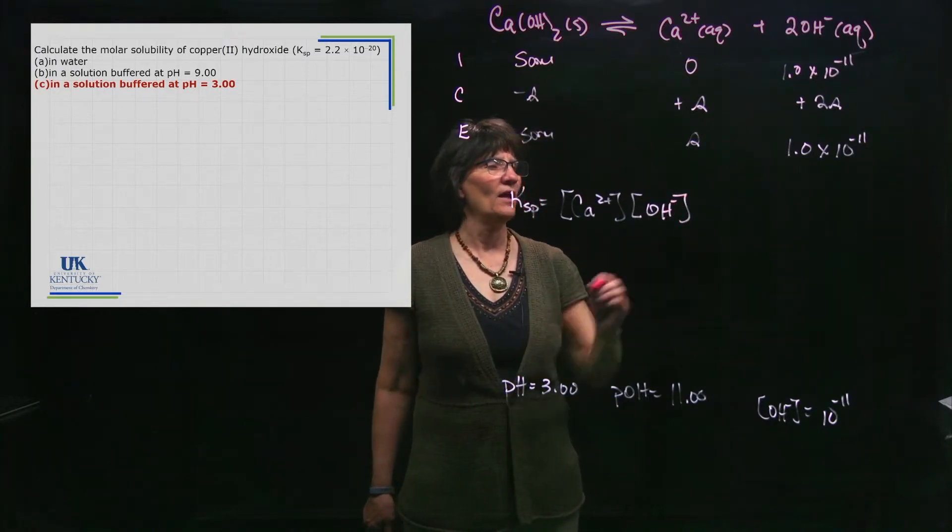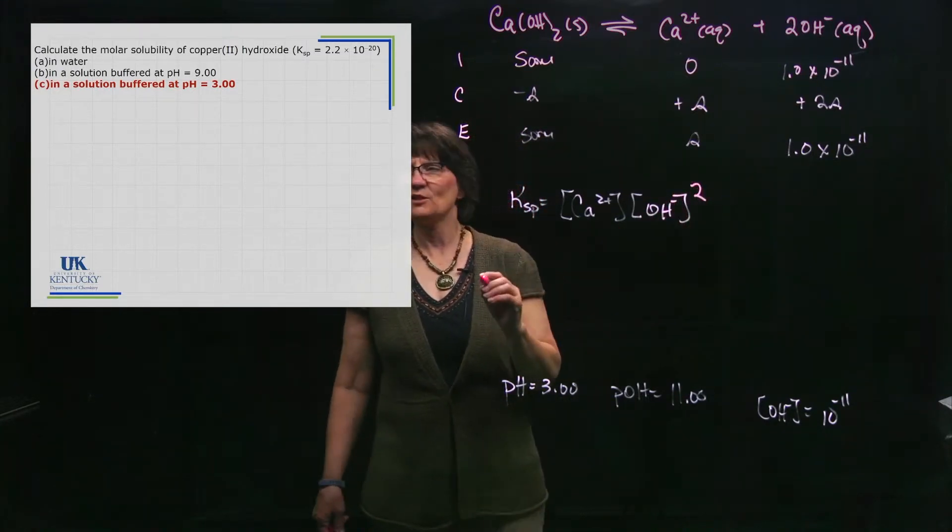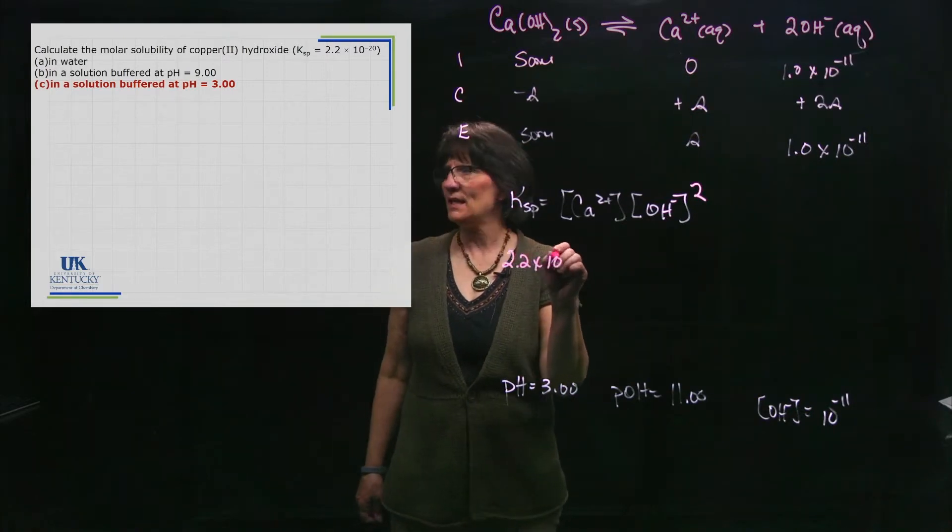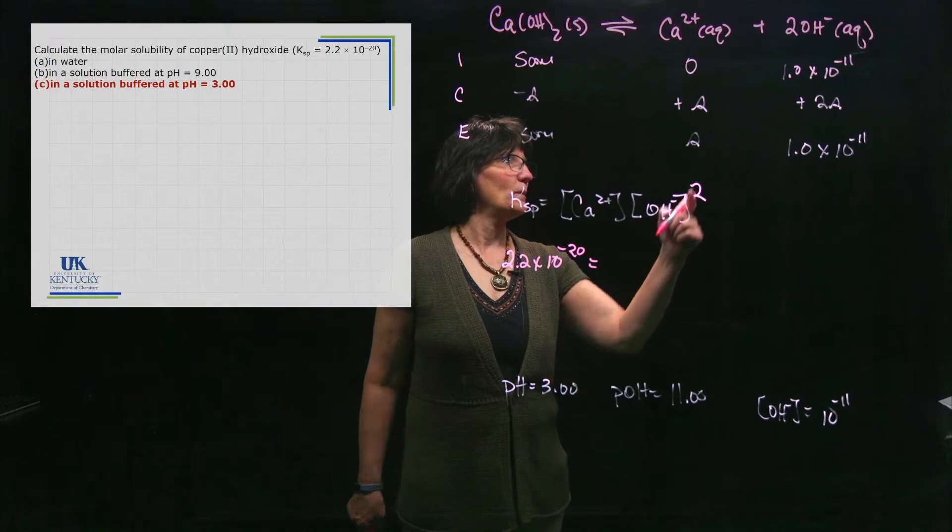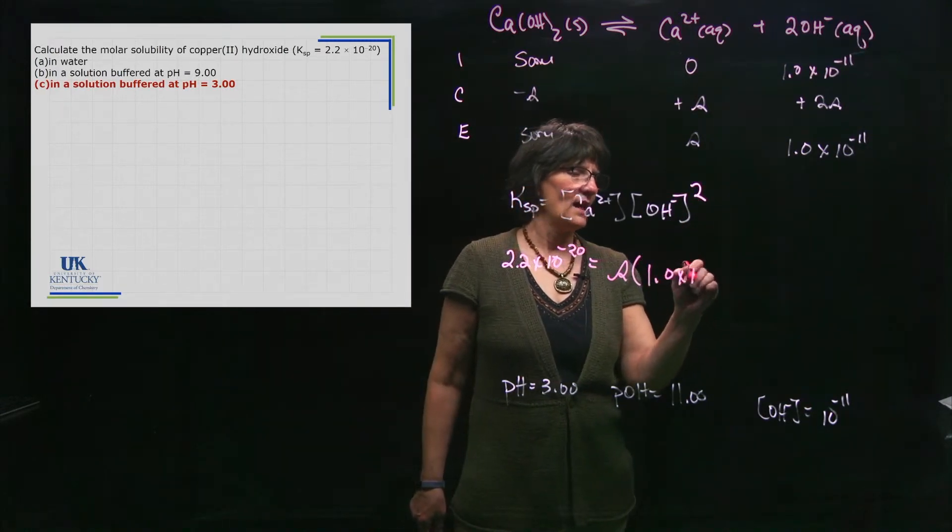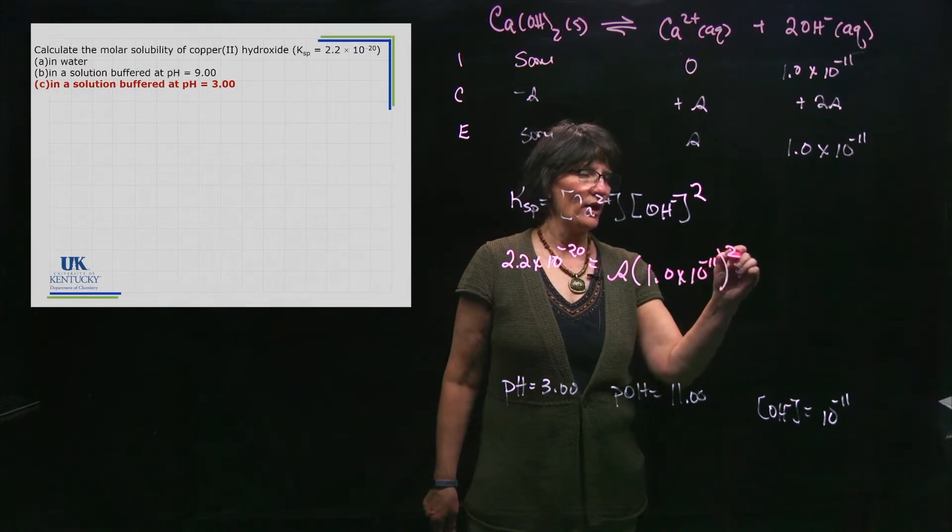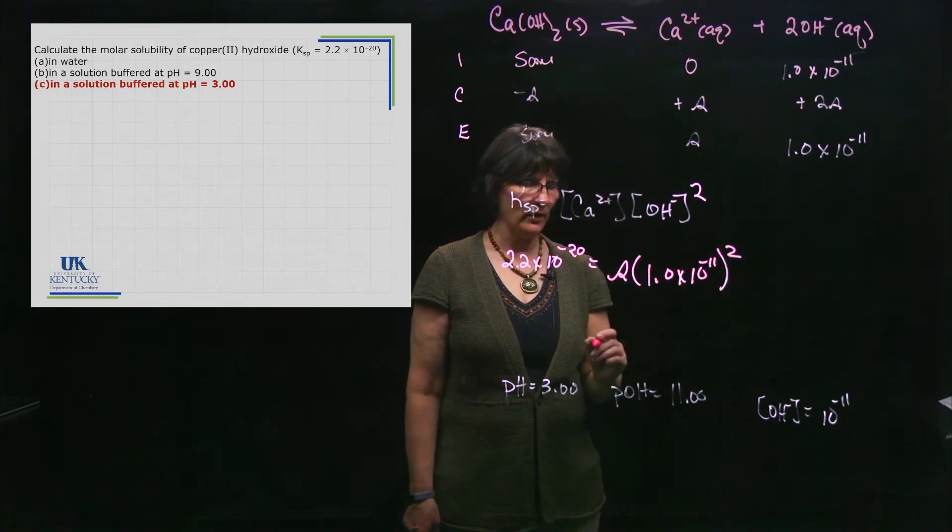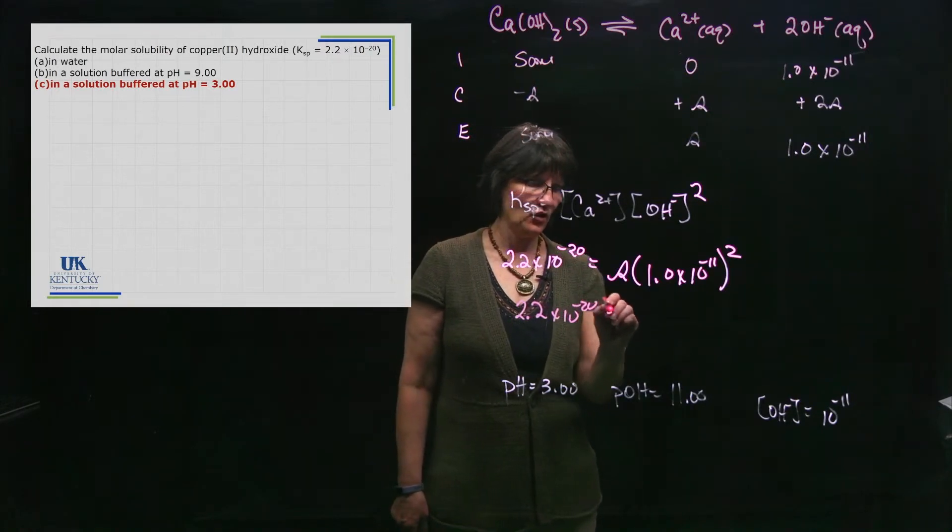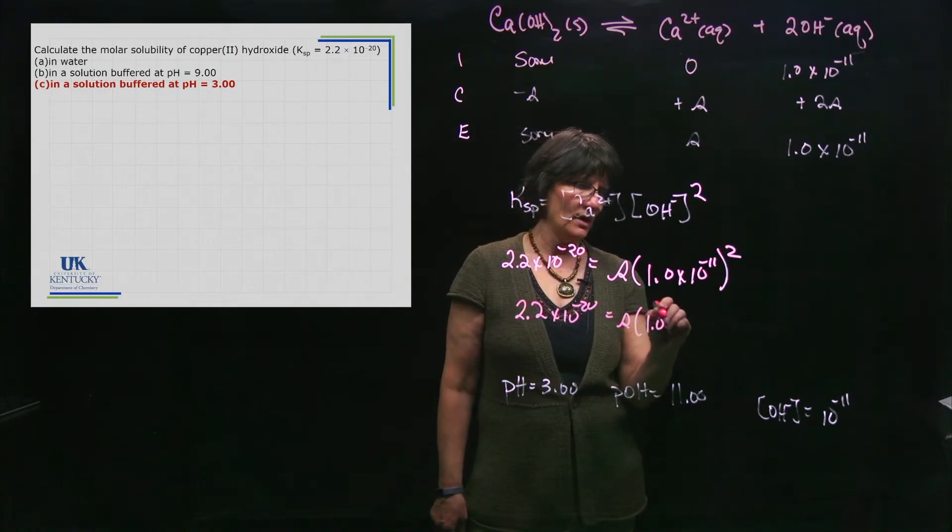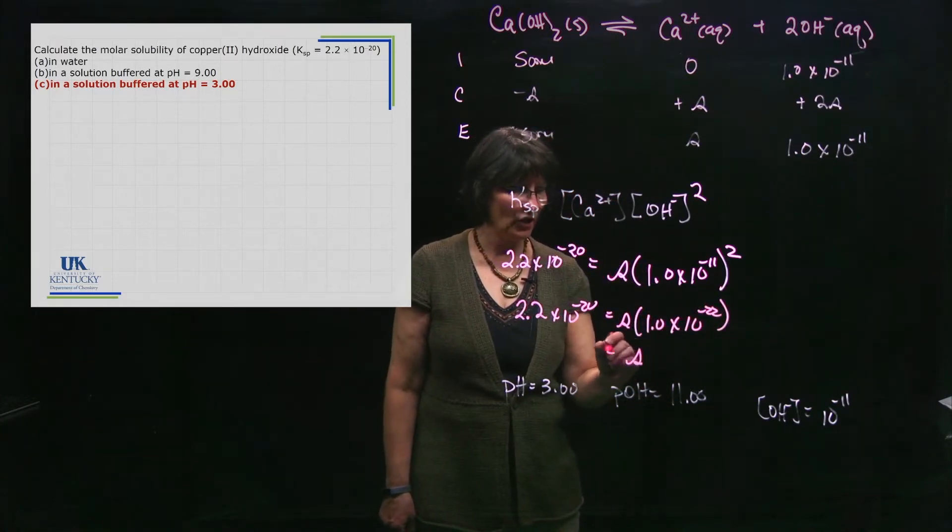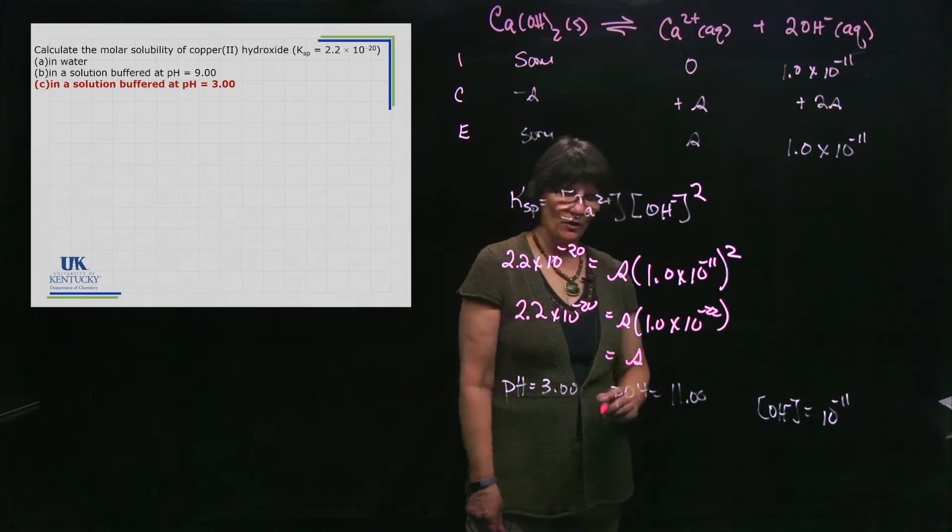KSP is given as 2.2 × 10⁻²⁰. That equals s times (1.0 × 10⁻¹¹)². When you square it, write that line as well—it's s times 1 × 10⁻²². When you divide this into that value, you get an s value of 220.